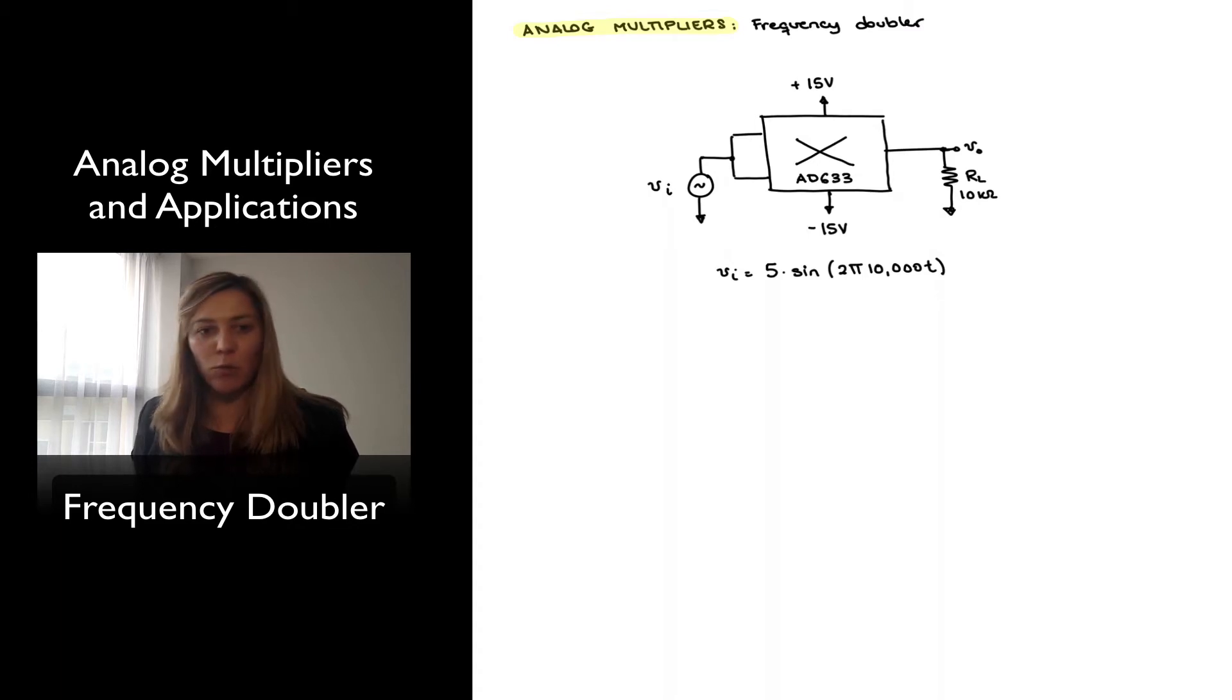So I've connected my analog multiplier, in this case the AD633, since we are familiar already with its transfer function. Remember for an AD633, my output voltage Vout is equal to one-tenth of the two input voltages. In this case, since my Vin is connected to the two inputs, I expect my Vout will be Vin squared divided by 10.